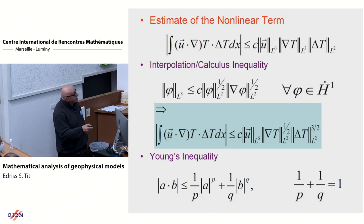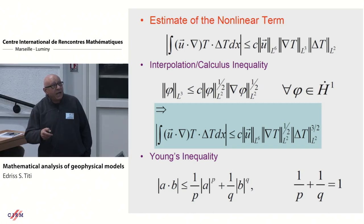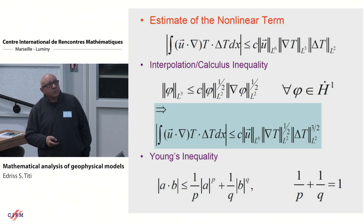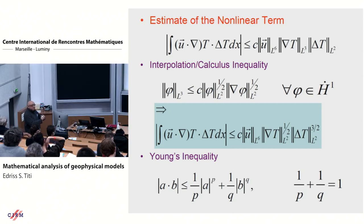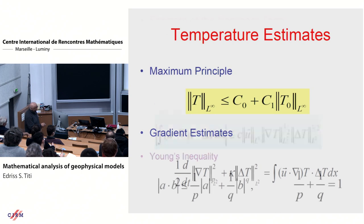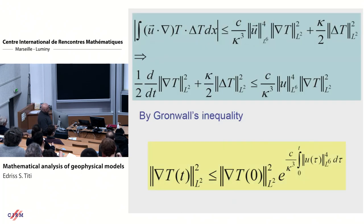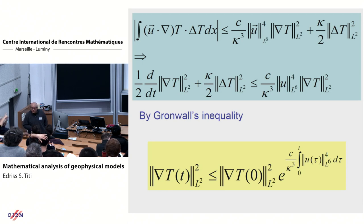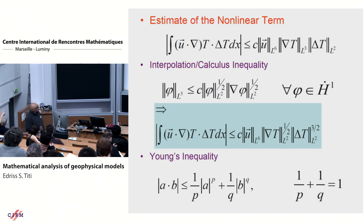I don't want a product — I want a sum — so I use Young's inequality: A times B is bounded by A^p plus B^q where one-over-p plus one-over-q equals one. I have a Laplacian to the power three-halves; I raise it to the power four-over-three to absorb it into the diffusion term on the right-hand side. Using Young's inequality, I end up with a balance for the temperature gradient.